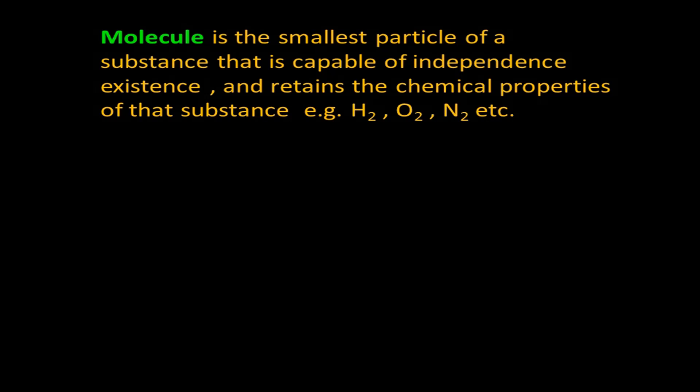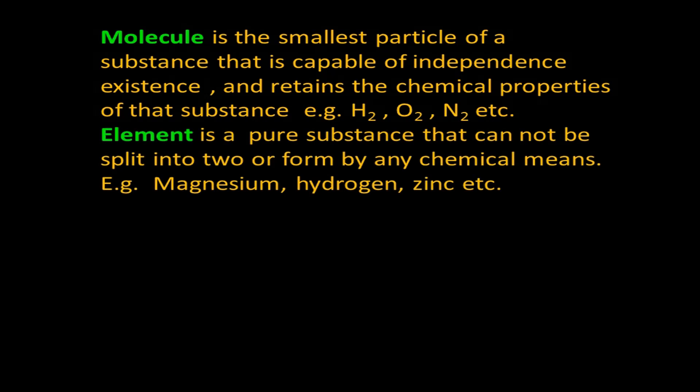Hydrogen gas exists in the form H₂, which retains the chemical properties of hydrogen — two atoms bonded together. The same applies to oxygen and nitrogen. An element is a pure substance that cannot be split into two or more different forms by any chemical means.